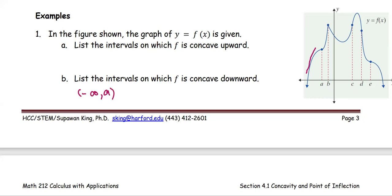The next part between a and b, the tangent line is below the curve. This part is concave upward.